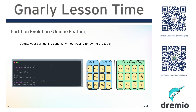It's very easy to make mistakes. What happens when you make a mistake, or when the way you're partitioning doesn't work anymore? In traditional systems, you would have to rewrite the whole table, because the way engines understood the partitioning was through subfolders. If you wanted to change the way you partition the table, it required a complete rewrite.